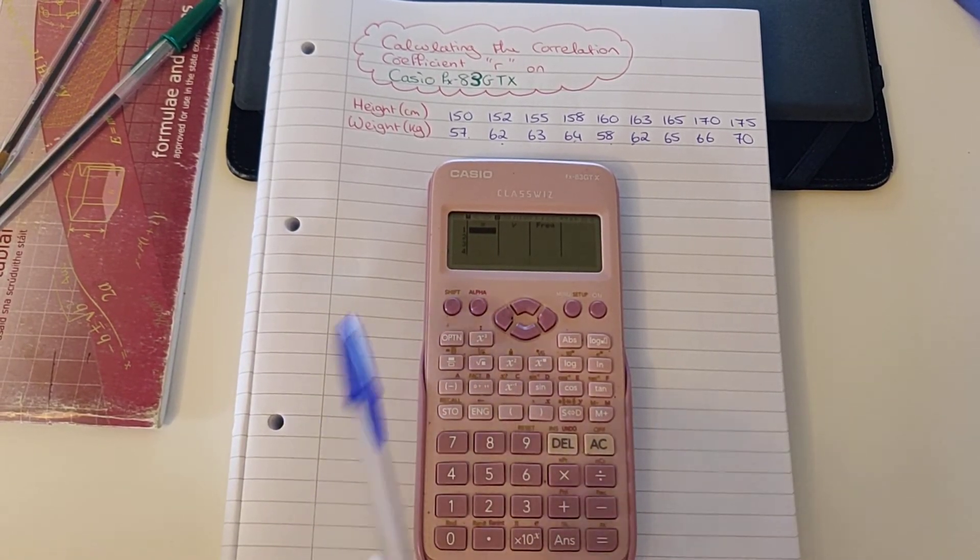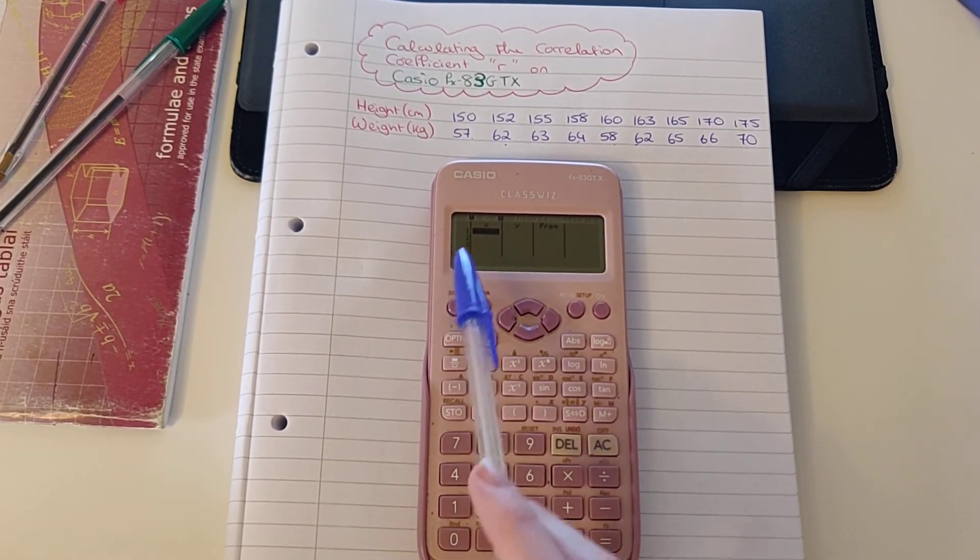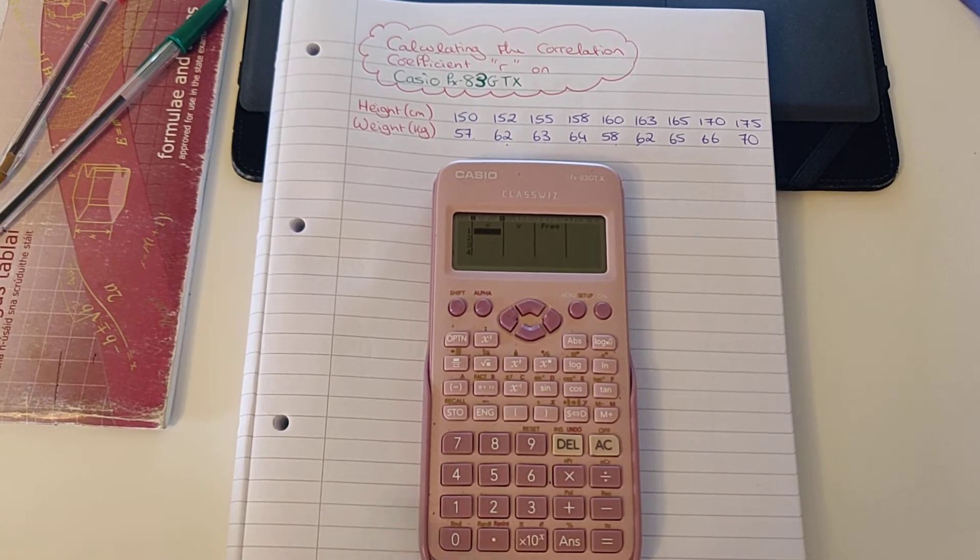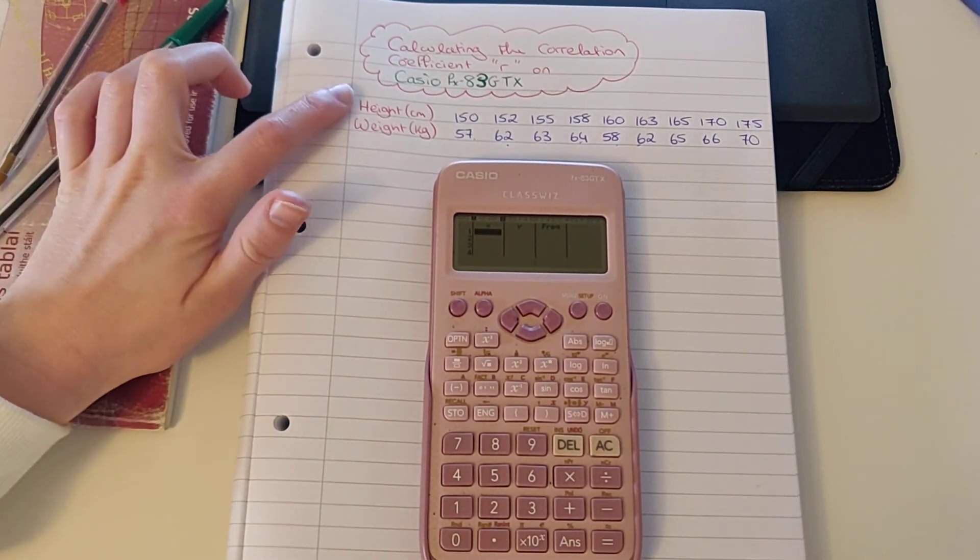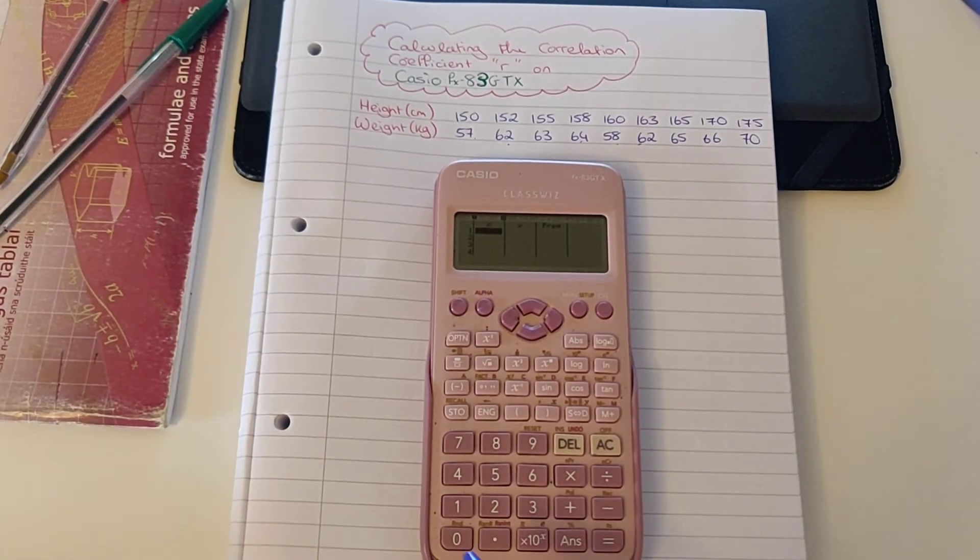Now when we draw the histogram, whatever we put on our x axis and whatever we put on our y axis should be in the relevant columns. Usually we would have put our height on our x axis, because it's going up in consistent heights.